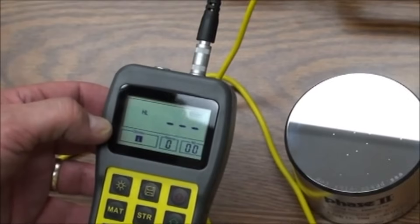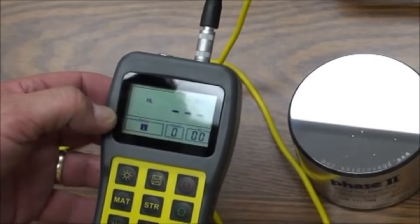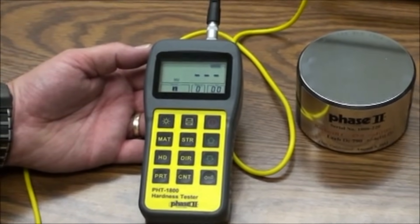Each indicator on the screen has a purpose. We will go over in detail the meaning of each and how to make any changes if necessary. Let's begin with material setting.